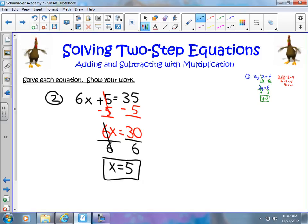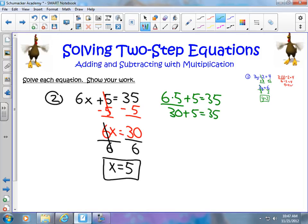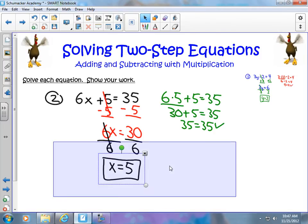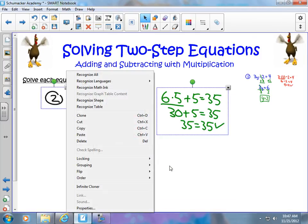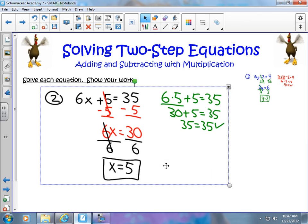So I can go ahead and plug this in and see if it works out. I have 6 times my 5 plus my 5 equals 35. Well, 6 times 5 is 30 plus 5 equals 35. 35 equals 35. And lucky there, I have a correct answer. Hopefully this problem is making some sense to you.